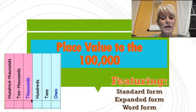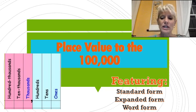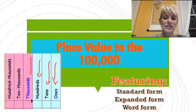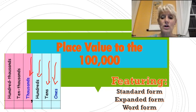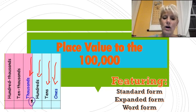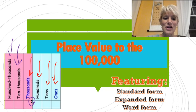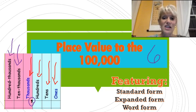Hi guys, time for another homework helper, and this time we're looking at place value to the hundred thousands. Let's review what we've already done. We've already talked about the ones place, the tens, the hundreds, and the thousands. Now I want you to take a look at the next two places we'll be looking at today: the ten thousands and the hundred thousands. So now we're going to be talking about six places — the other night we were talking about four and we've added on two more.